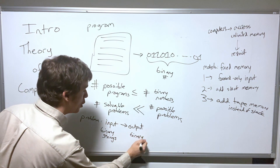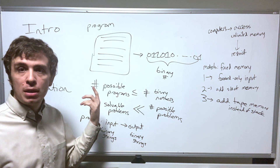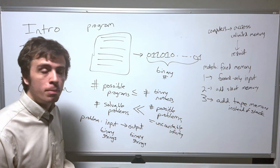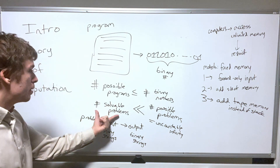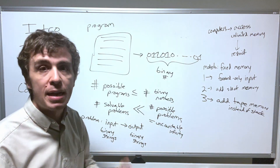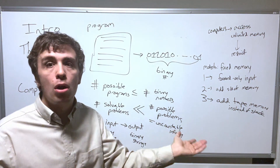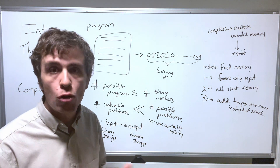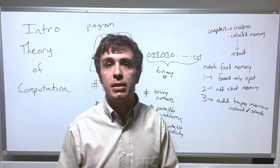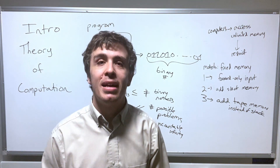We want to compare that to the number of possible problems. Each problem maps some binary string input to some binary string output. The number of possible functions from binary strings to binary strings is an uncountable infinity — meaning there's no way to list them all. For solvable problems I can tell you the first, second, third, and so on, but for possible problems that's literally impossible. This is essentially Cantor's diagonalization argument. So hopefully that was interesting — please like the video and subscribe, and thanks for watching.